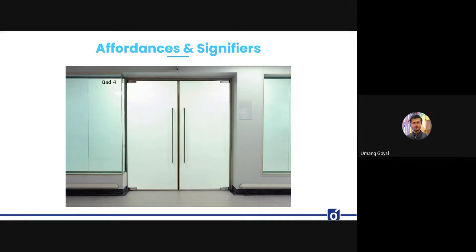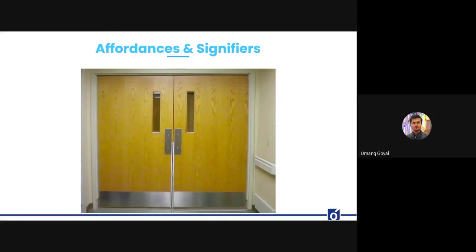A simple everyday example is doors. We often get confused whether a door should be pulled or pushed. A door with a vertical rod or handle at the center can go either way — that is bad interaction design. But a door with only a flat metal plate in the center can only be pushed, since there is nothing to pull. This is a good example of using affordances to guide a certain behavior.